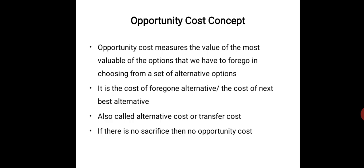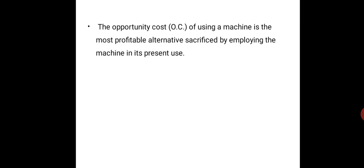Opportunity cost exists only when there is a sacrifice — that is, when there are alternative uses for a product or resource. The cost of using a machine is the most profitable alternative sacrificed by employing the machine in its present use.